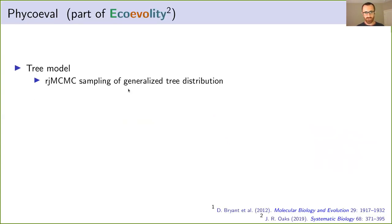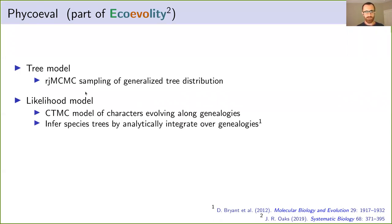We implemented this new tree model, this new generalized tree model in the software package EcoEvolity. And the new tool is called FICOEVL. And we coupled this tree model with a multi-species coalescent likelihood model that analytically integrates over genealogies and character histories along those genealogies. What I want to make clear here is this tree model is actually agnostic to the likelihood model. So it could be coupled with any phylogenetic likelihood model. We just use the multi-species coalescent model here because our goal is to infer species trees with shared divergence times from genomic data.